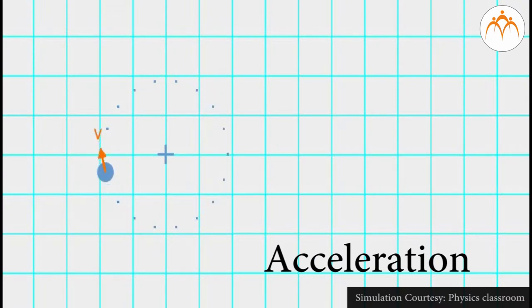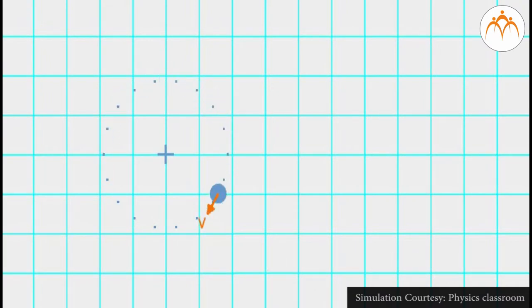As an object moves in a circle, it is constantly changing its direction. At all instances, the object is moving tangent to the circle.